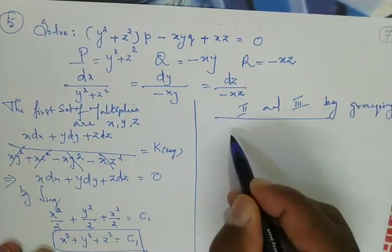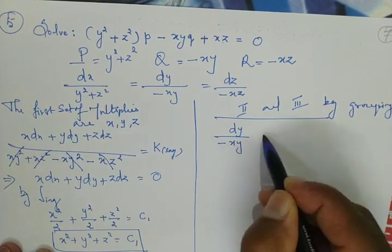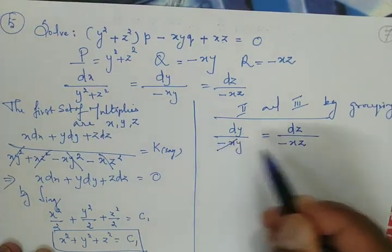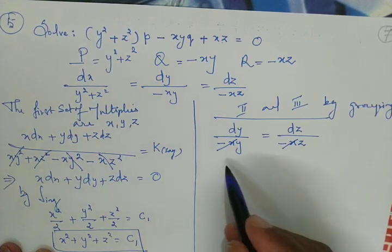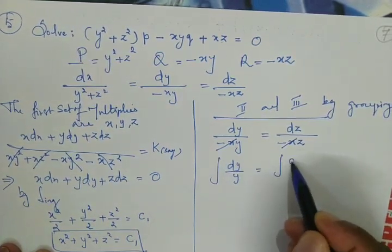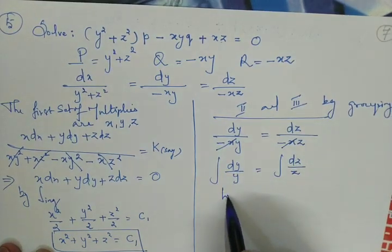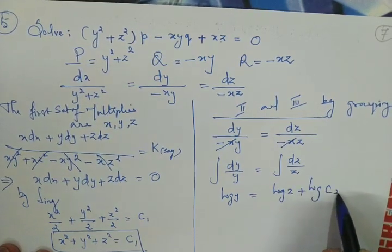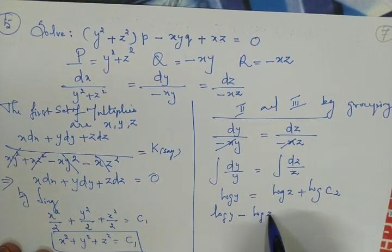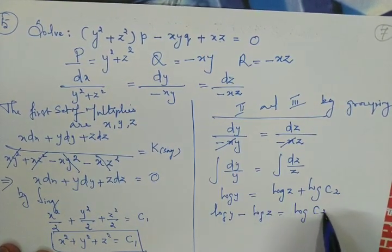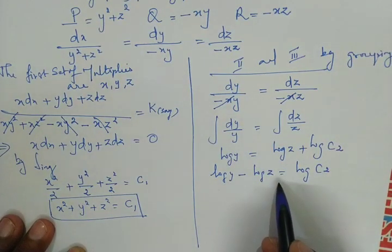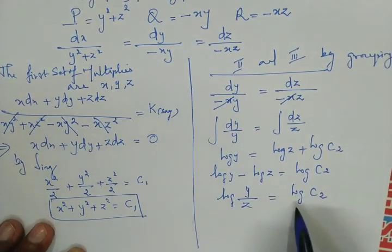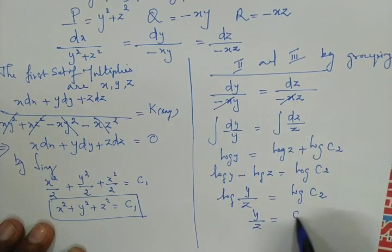The second and third give: dy / (-xy) = dz / (-xz). Since -x is common in both denominators, it cancels, leaving dy/y = dz/z. Integrating: log y = log z + log c₂, so log y - log z = log c₂, giving log(y/z) = log c₂, and therefore y/z = c₂.